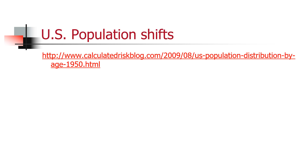If you take a look at this particular URL, it has an over-time look at the shifting U.S. population, indicating that on average the U.S. population is getting older. You can also see those baby boomers — that large group of people born right after World War II — as they move their way through the U.S. population, and now they are becoming retirees.